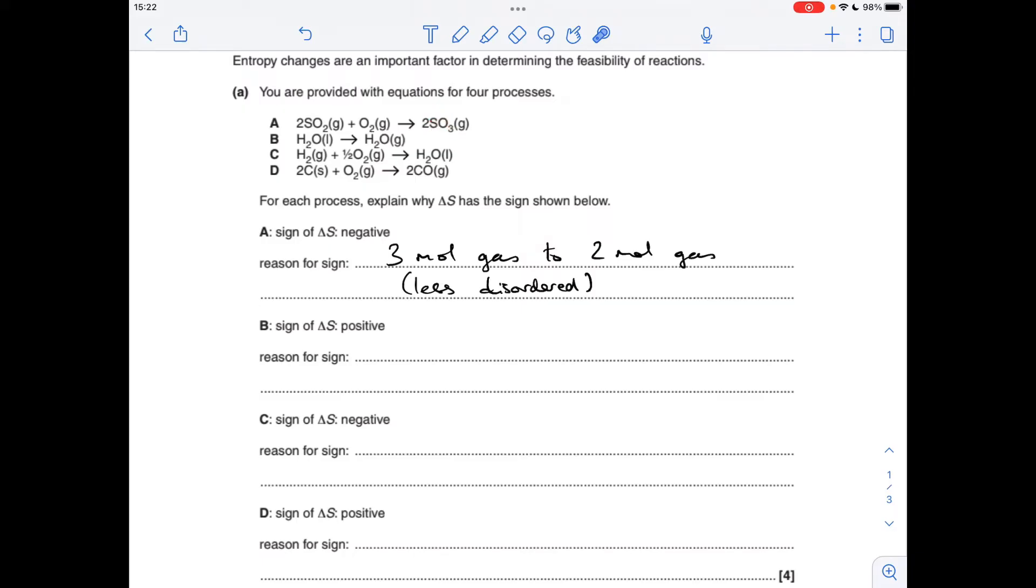Next one, we're going from liquid H2O to gaseous H2O, so obviously it's getting more disordered, and that's why you've got that positive delta S. And C, delta S is negative, so why is it getting less disordered? It's because you're going from gas to liquid. And D, delta S is positive, so it's getting more disordered. Why would that be? One mole of gas to two moles of gas.